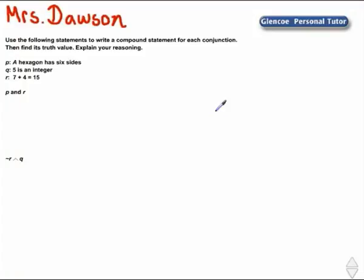This is Mrs. Dawson, Truth Values of Conjunctions. Use the following statements to write a compound statement for each conjunction. Then find its truth value. Explain your reasoning.